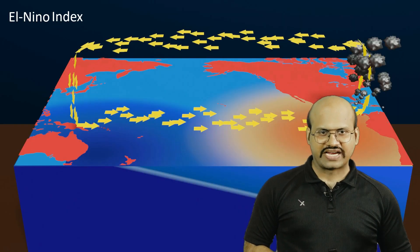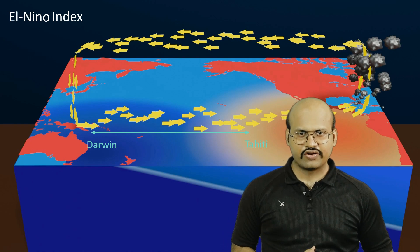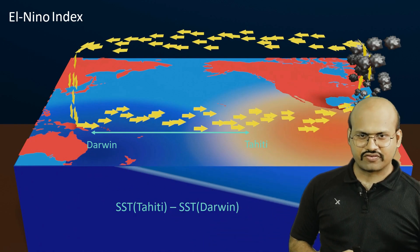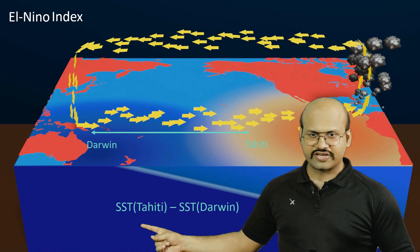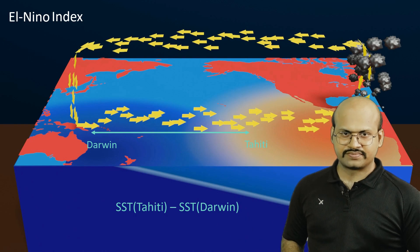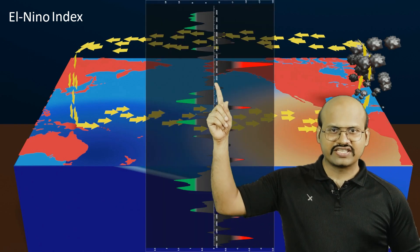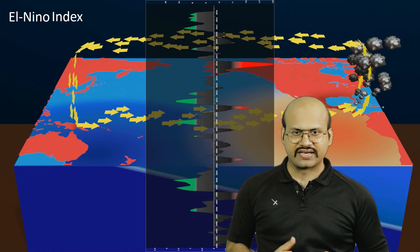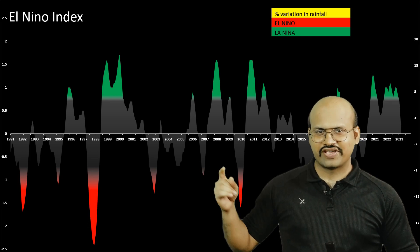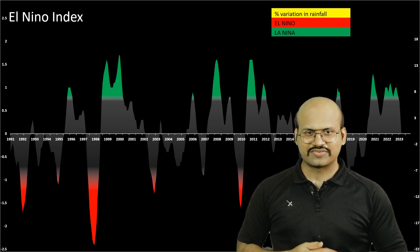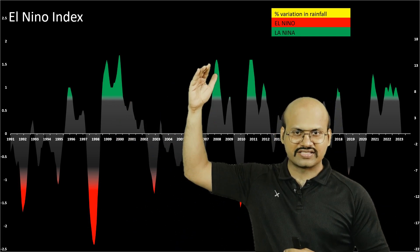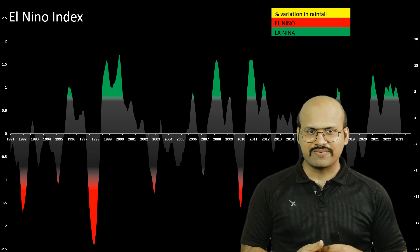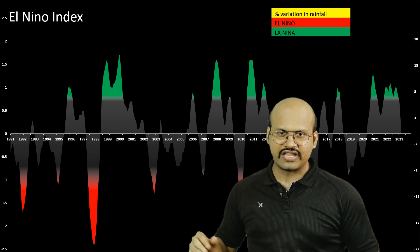To understand the effect of El Niño, scientists developed the El Niño index, measured between Tahiti and Darwin near Australia using sea surface temperature — specifically, SST of Tahiti minus SST of Darwin. When this index is positive we get El Niño, and when negative we get La Niña. Here we have plotted the El Niño index in the opposite direction so that it is easier to understand, since La Niña positively impacts Indian monsoon and El Niño negatively impacts it.